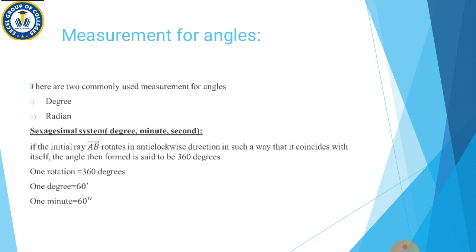Next hai aap ke paas measurement for angles. There are two commonly used measurements for angles: degree and radian. Angle ko hum do tarike se measure kar sakte hain — pehla hai degree, doosra hai radian. First ko discuss karte hain: sexagesimal system, jisme hum basically degree, minute aur second ko lete hain.